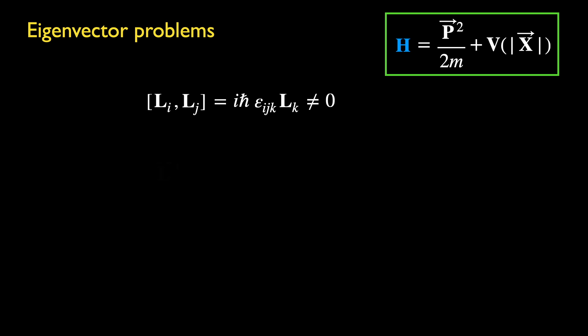But because L is a vector operator, L square must be invariant under all rotations, and as a result commutes with all the components of angular momentum. H also commutes with L square, as it does with every component.